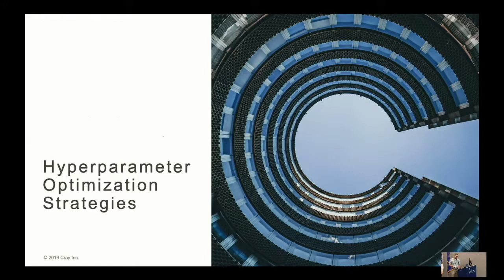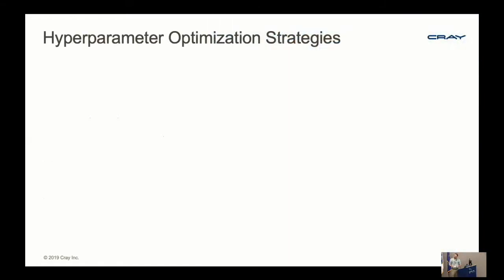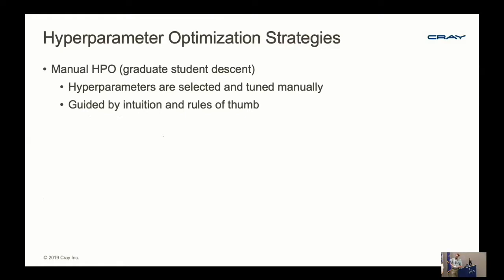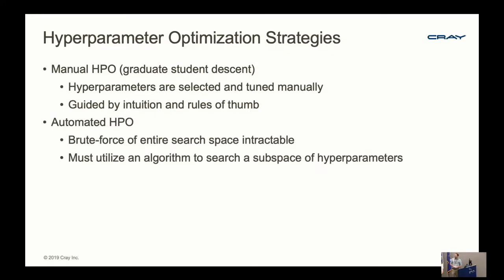Now I'm going to review some hyperparameter optimization strategies. At a very high level, there are two main categories. We have manual HPO—or as I like to call it, 'graduate student descent'—where hyperparameters are selected and tuned manually, guided by intuition or rules of thumb. And then there is automated HPO, where we search the hyperparameter space algorithmically. Doing a brute force search of the entire space is intractable, so we must use algorithms that search a subspace.